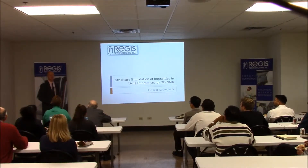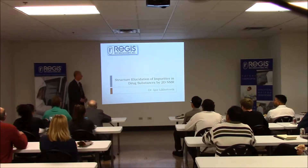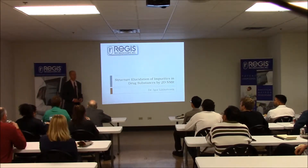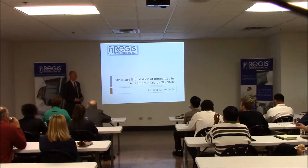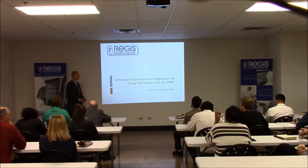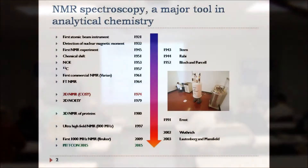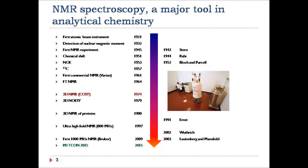Federal regulations and ICH guidelines clearly state that if impurities exceed certain thresholds they should be identified. We found that NMR is actually a major tool for structural elucidation, and mass spectroscopy evolved over many years from a completely theoretical concept to a very useful practical tool — one of the greatest fundamental discoveries of the 20th century.